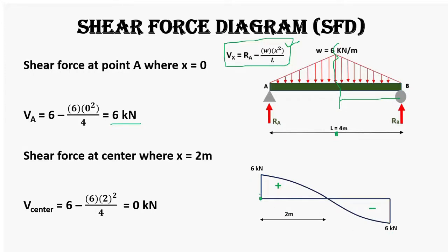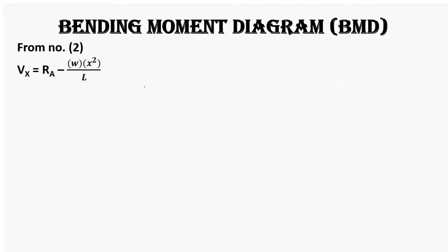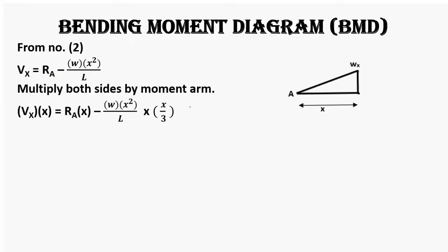Let's draw the bending moment diagram by multiplying the shear force equation by the moment arm to get the bending moment equation. We consider the moment at distance x: RA contributes RA × x (positive, upward), and the triangular loading contributes negatively — the total triangular load Wx²/L multiplied by its centroid distance x/3 from the cut point, since the centroid of a triangle is at one-third of its base. A detailed video on centroids is available in the description.